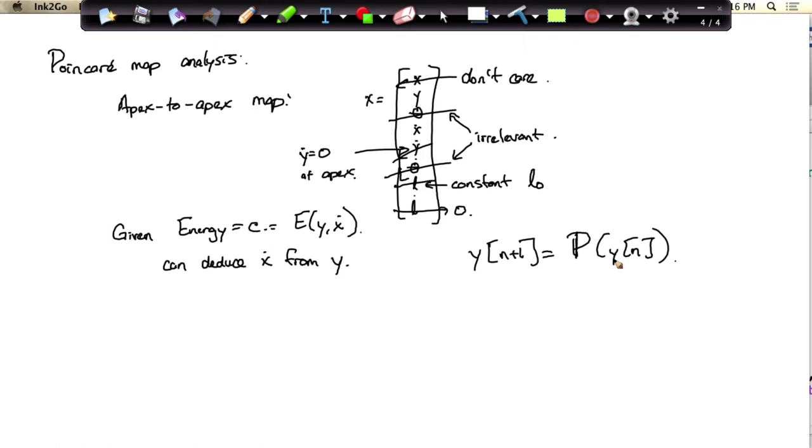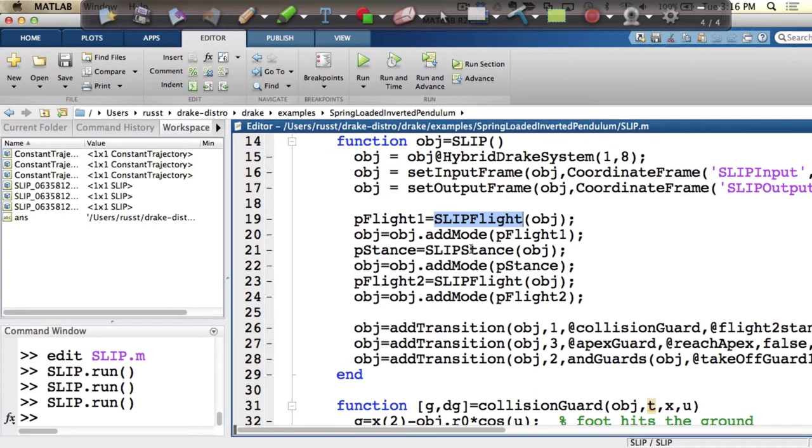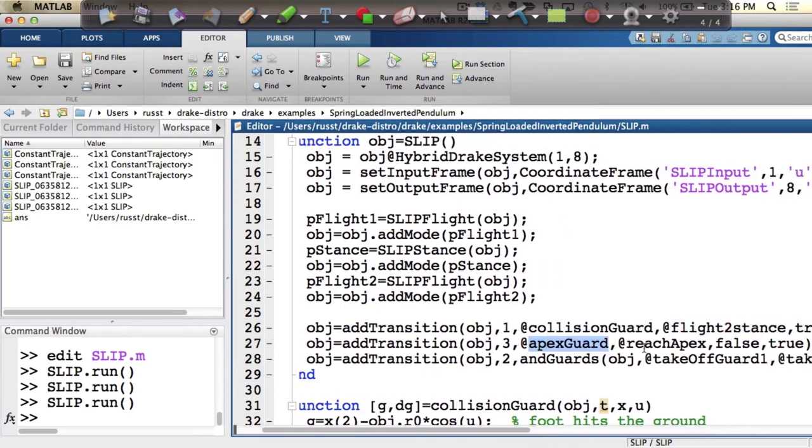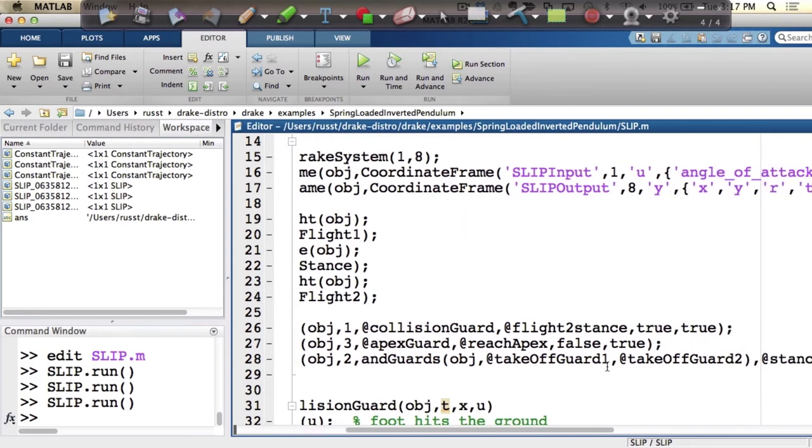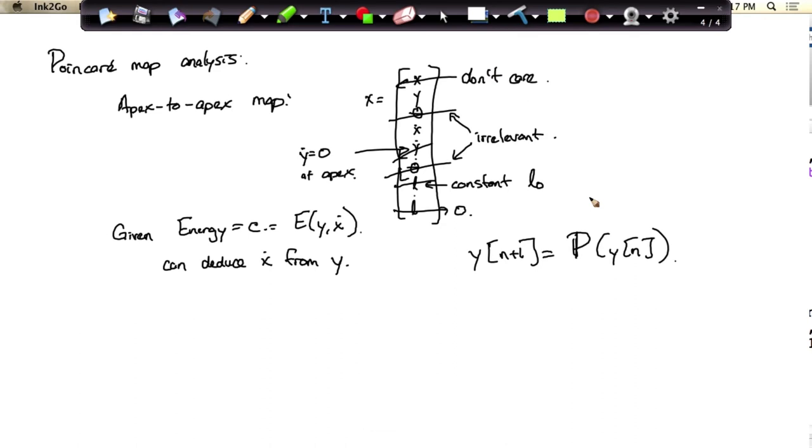There was a good question on the discussion forums about what dimension do we write down p in? And when you're doing it numerically, you often choose the full n dimensions and you can take eigenvalues and the like, and then you get a zero eigenvalue out. When you're doing analysis, you do your darndest to get it down to the minimal description of it. Of course, you're living on an n minus one dimensional manifold at least. And it turns out this slip model lives on even a one dimensional manifold. So you might as well write it down with one variable. If I know the y position at the apex, then I know everything about the state of the hopper and I can simulate forward. Now, the simulation has a couple different modes in it. If you look at the model, there's a flight mode and a stance mode in the hybrid system.